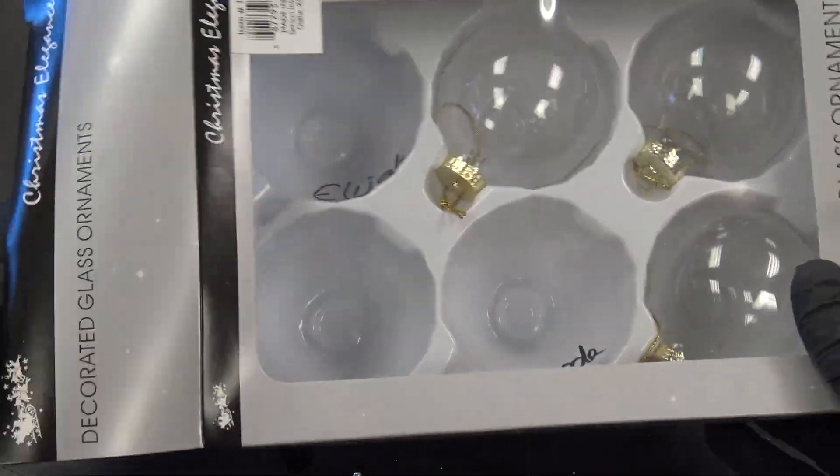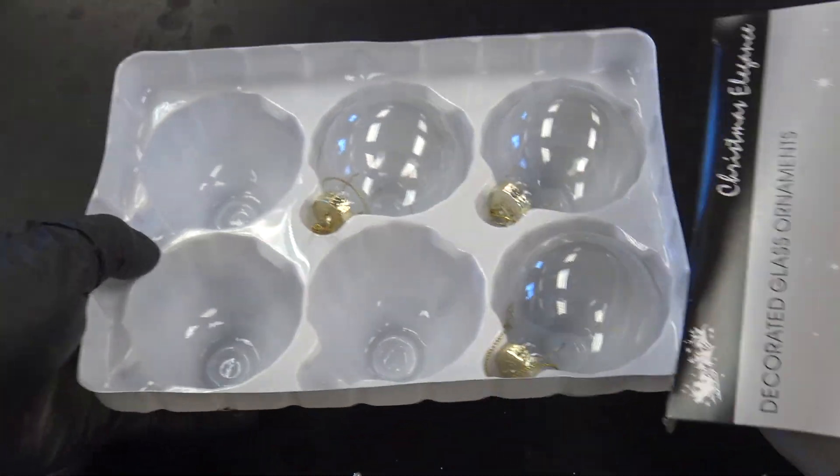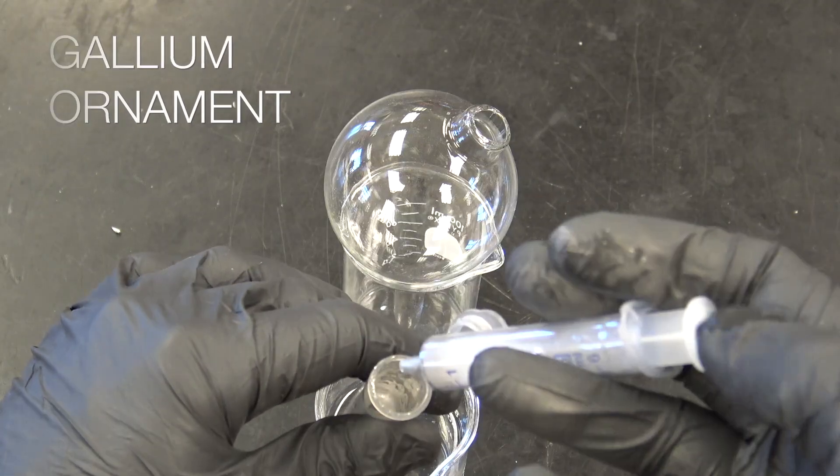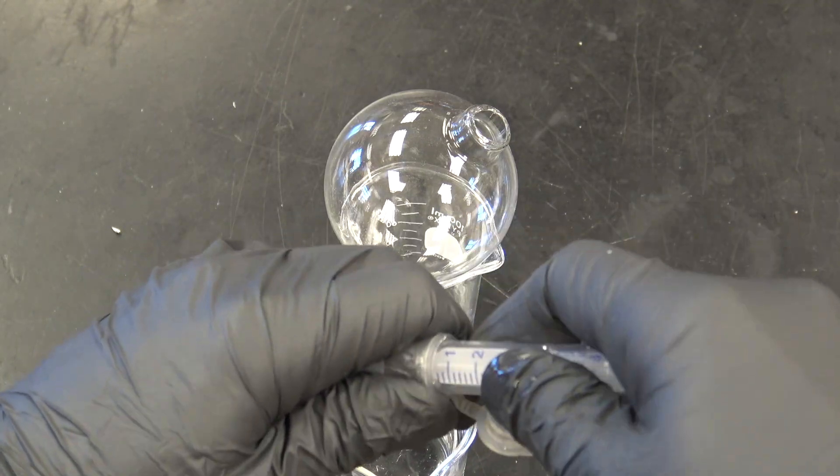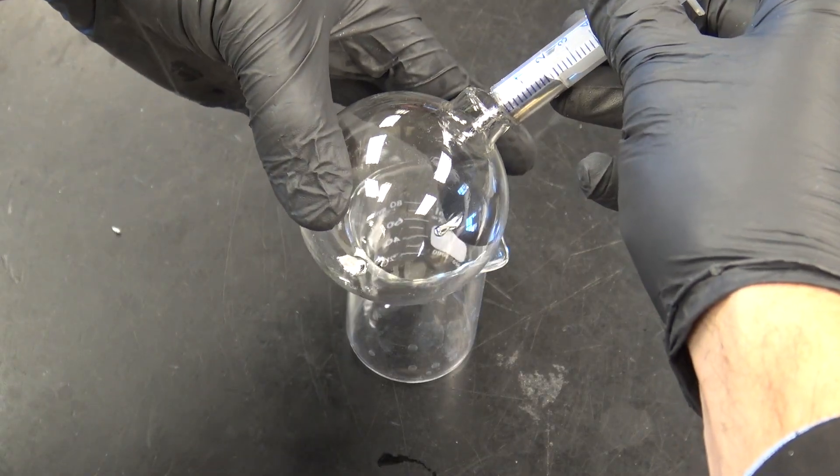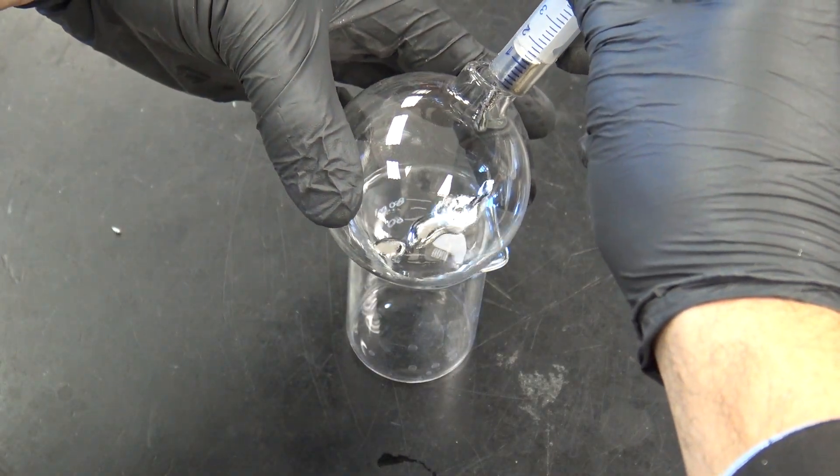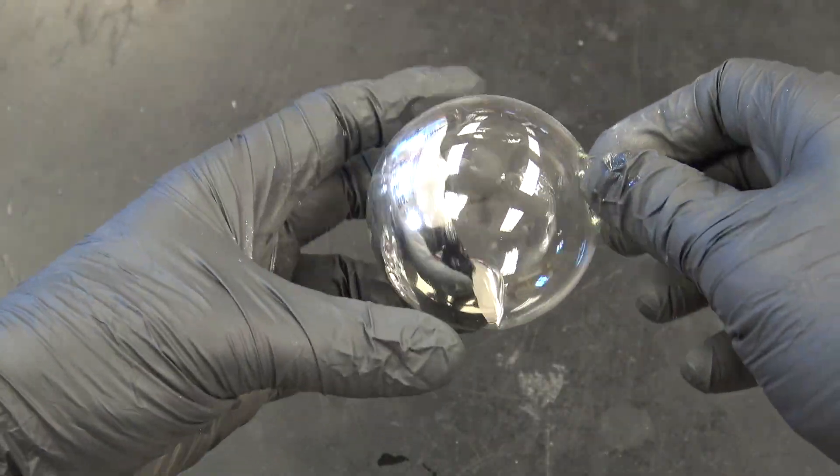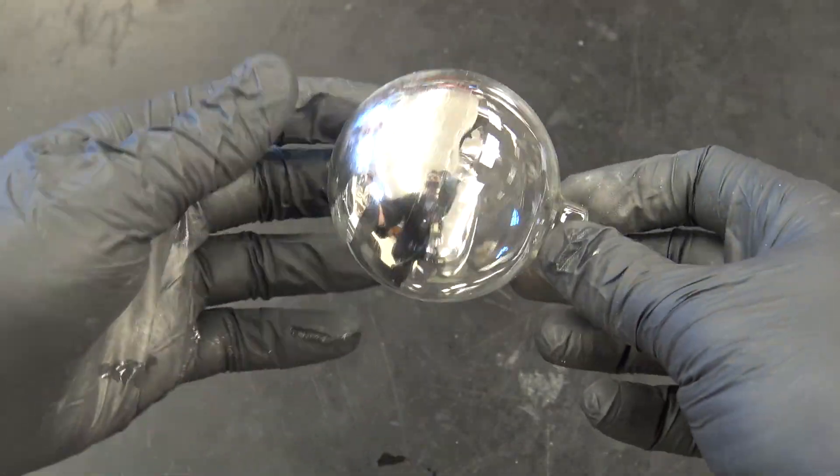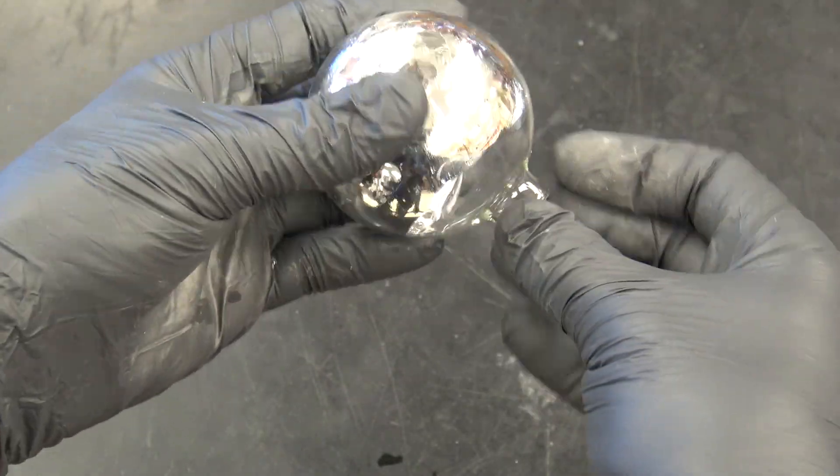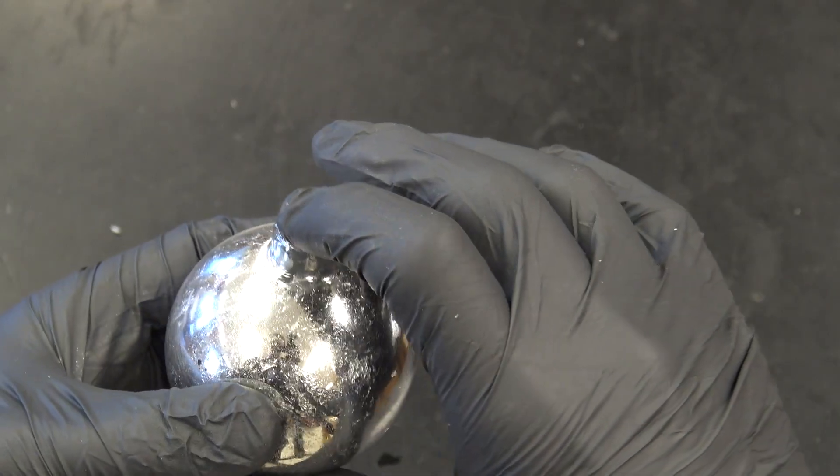I decided hey you know what? I wonder if I could pour some of this in one of those glass bulb ornaments and then shake it around and as it cools down it should solidify and I've got this wicked awesome Christmas ornament that's got a gallium coating on the inside and it would be all mirror-like. So this was just truly me experimenting to see what would happen. And I must say I was quite pleased with the result.